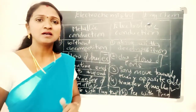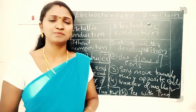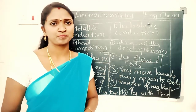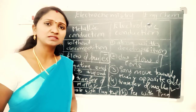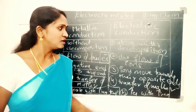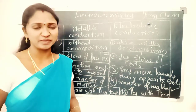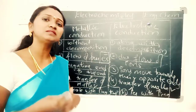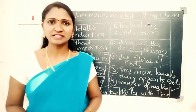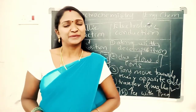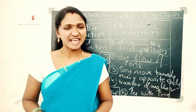Examples of metallic conductors include metals like iron, copper, and aluminium. Examples of electrolytic conductors include strong acids, weak acids, strong bases, weak bases, and other aqueous solutions. I hope you understand. Thanks for watching.